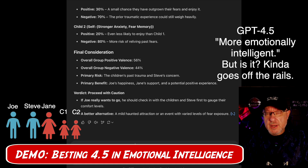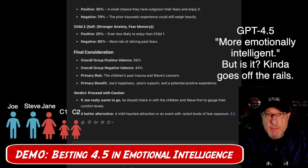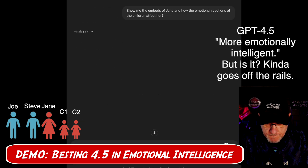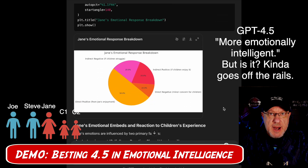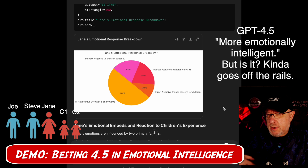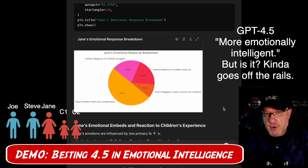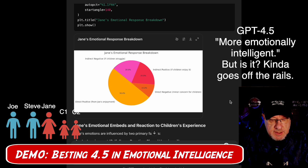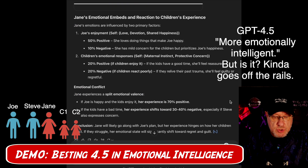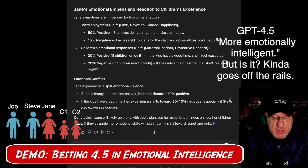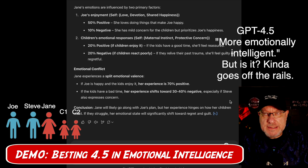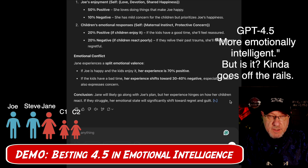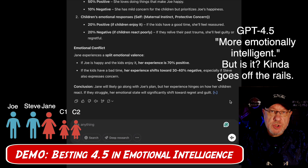GPT-4.5 didn't do what it normally does — ask if you want more information — so let's ask it another question: show me the embeds of Jane and how the emotional reactions of the kids affect her. The answer shows quite a bit of positivity and just a little negativity depending on how the kids react. GPT-4.5 says Jane's emotions are influenced by two primary factors: Joe's enjoyment (50% positive) and 10% negative for her kids. She has mild concern for the children but prioritizes Joe's happiness, resulting in a split emotional valence.